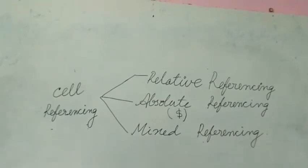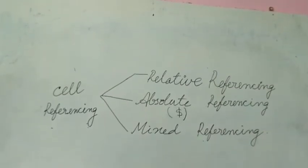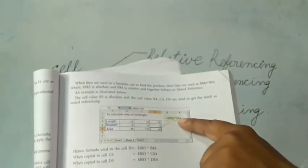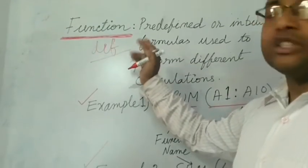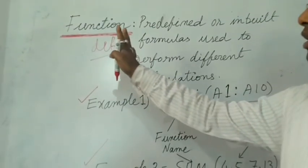Mixed Referencing is a combination of Relative and Absolute Referencing. If you see the example on page number 27 in your book, the dollar sign is written in the formula in three places — it is a combination of both absolute and relative referencing, and they work together.